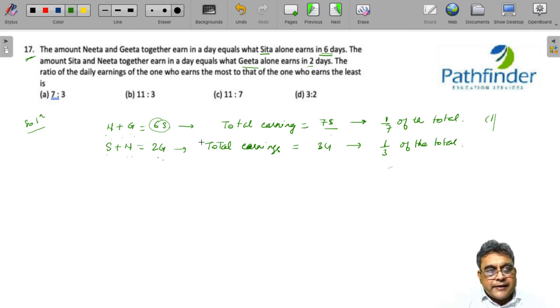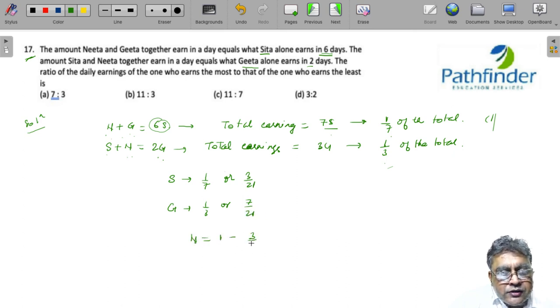Now we know that Sita earns 1/7th of the total and Geeta earns 1/3rd of the total. What amount will the third person, Neeta, earn? We know that Sita earns 1/7th or 3/21st of the total and Geeta earns 1/3rd or 7/21 of the total. Neeta should earn 1 minus 3/21 minus 7/21, that is 11/21 of the total.